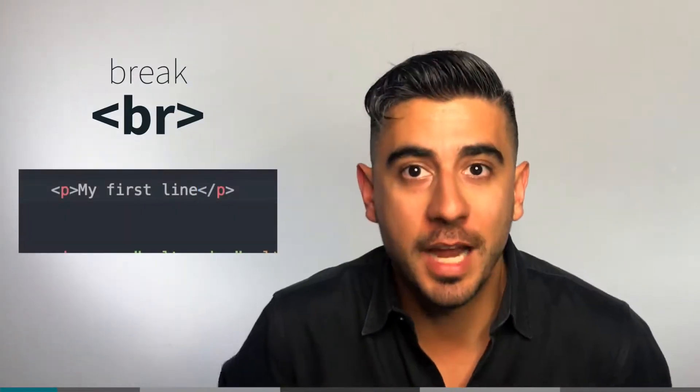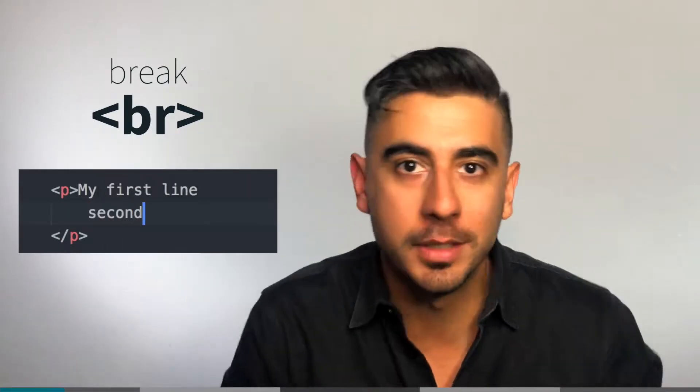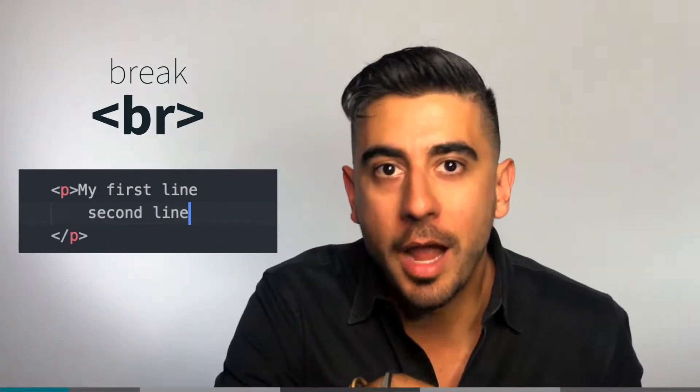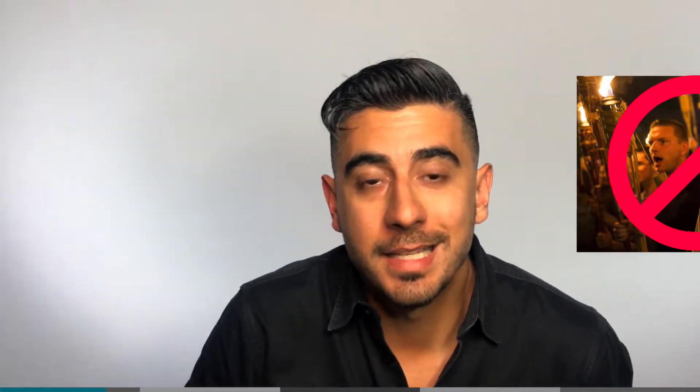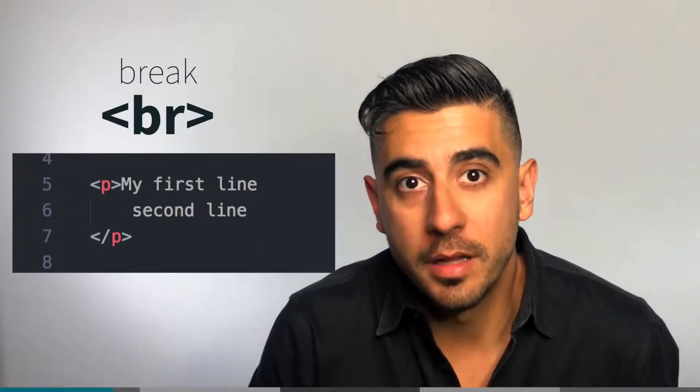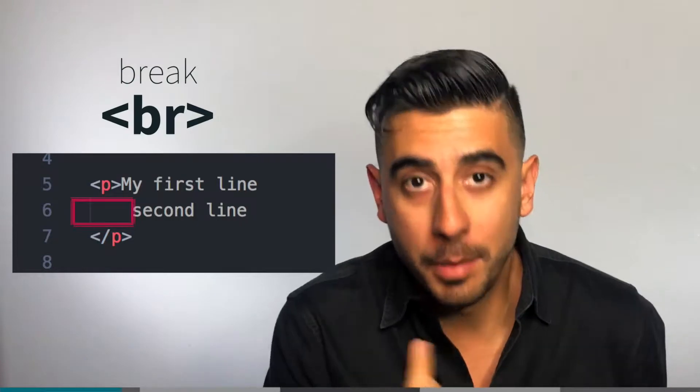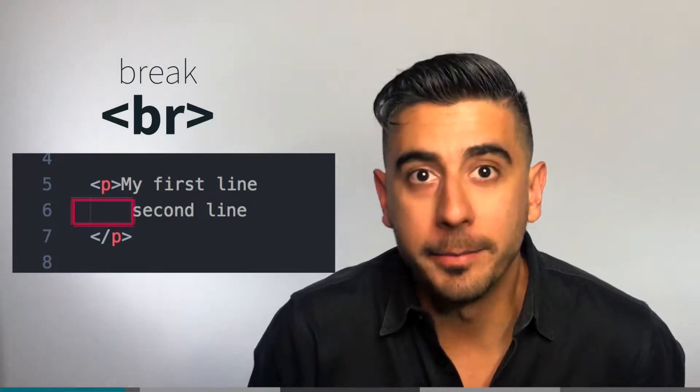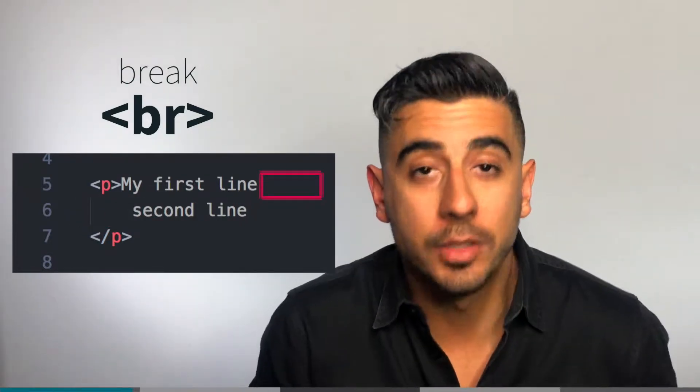BR is a break — a line break. If you want to put a break within your text, if you just press enter and go to the next line in your code, it doesn't mean the browser will render it that way. It actually ignores it. We call this white space — not that kind of white space, but white space in the same way that it ignores the space or tab at the beginning of the line. The same way it will ignore your enter also.